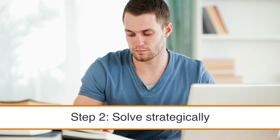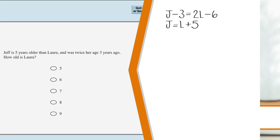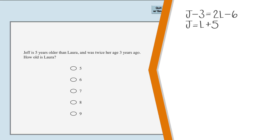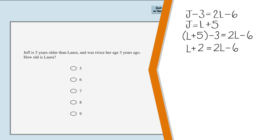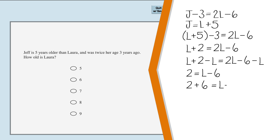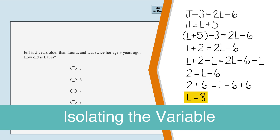Step two is to solve strategically. We know that j equals l plus five. By plugging the first equation's value of j into the simplified second equation, we can get a brand new equation with just l. We can remove the parentheses on the left-hand side and combine the plus five with the minus three to simplify the new equation even further. We can then subtract l from both sides and add six to both sides. In algebra, this is known as isolating the variable, so l equals eight.